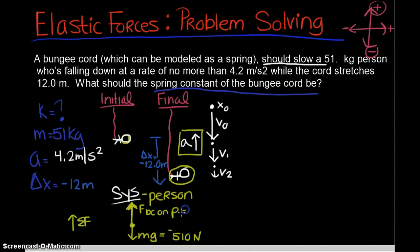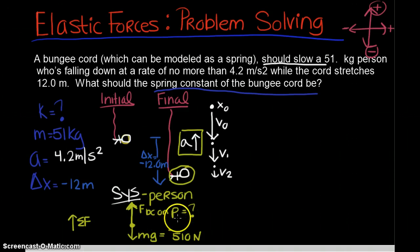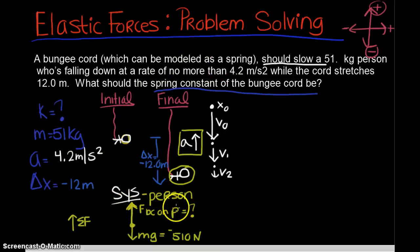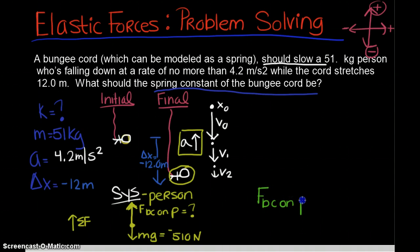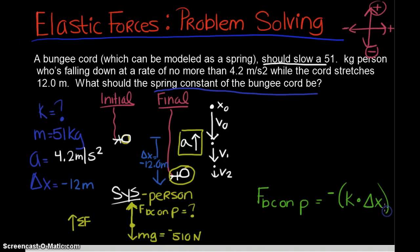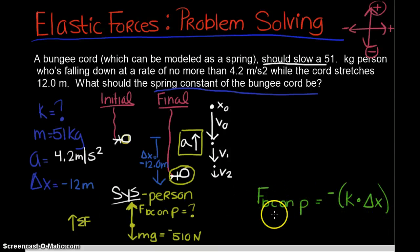I don't know force of bungee cord on the person, but because I know that the bungee cord can be modeled as a spring, I know that this is an elastic force. So force of bungee cord on the person is an elastic force, which means that it can be modeled using Hooke's law. So this will eventually equal the opposite of the product of the spring constant times the displacement. When I take a look at this, I don't know force of bungee cord on the person and I also don't know the spring constant, so I'm really not ready to find this just yet.